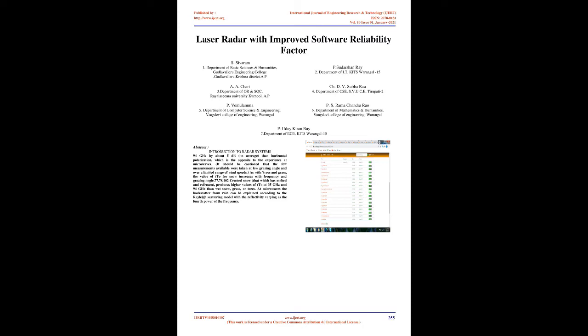At microwaves the backscatter from rain can be explained according to the Rayleigh scattering model with the reflectivity varying as the fourth power of the frequency.